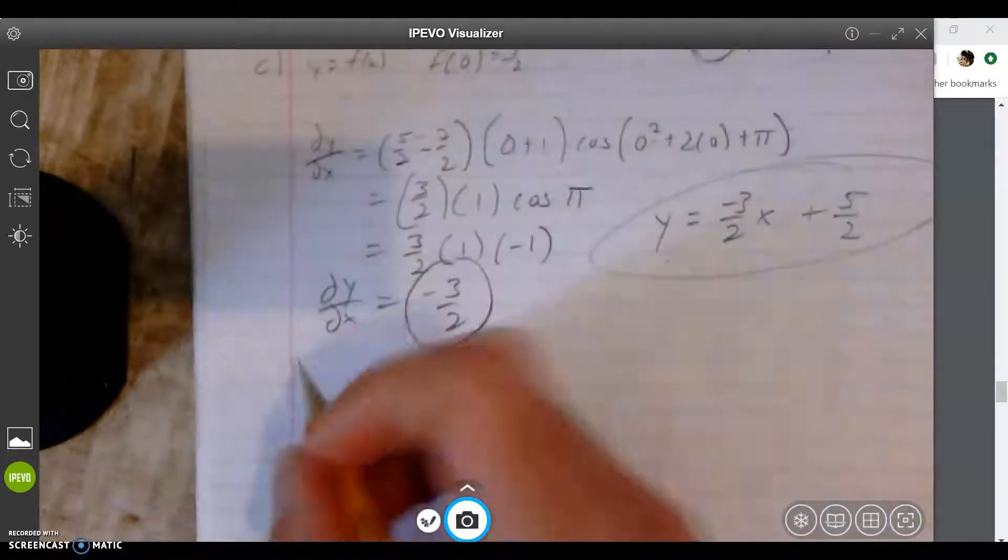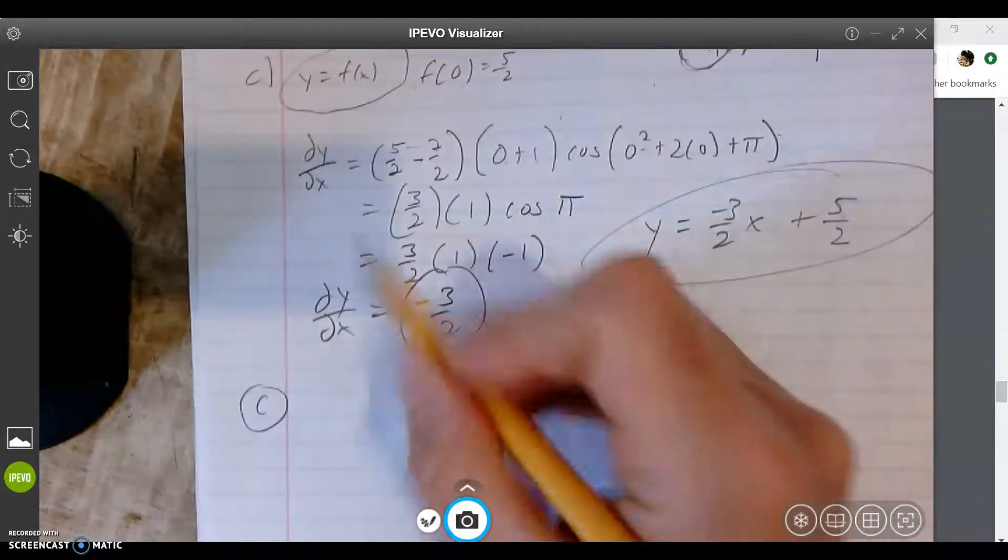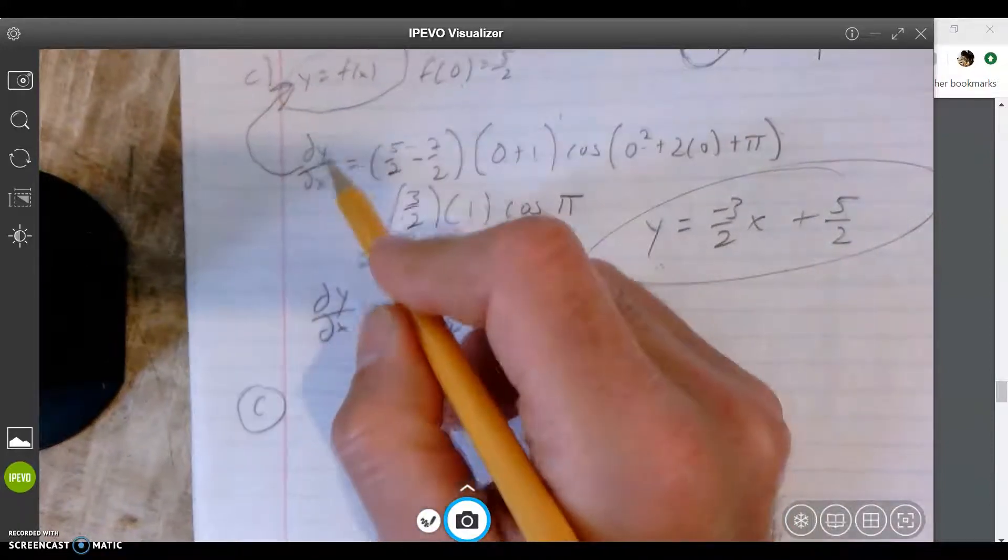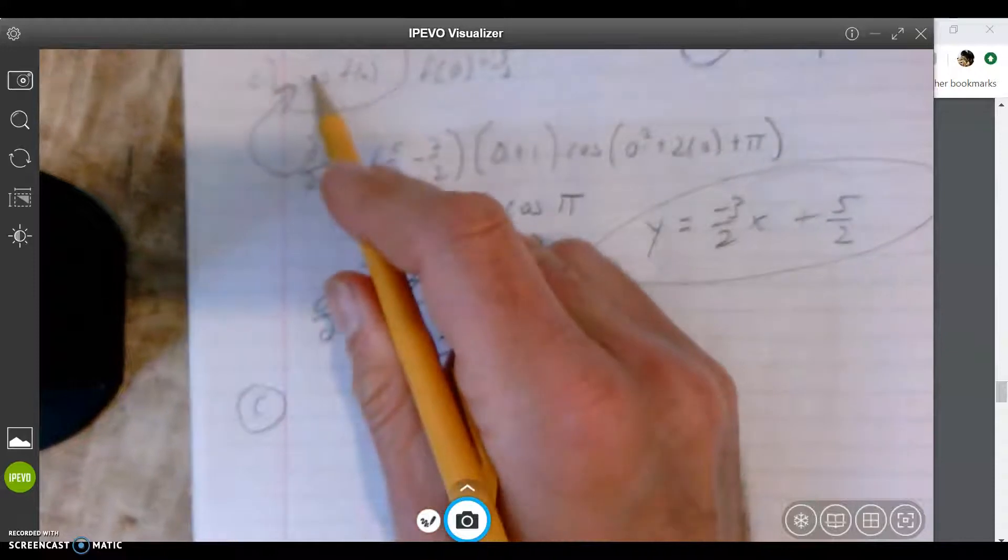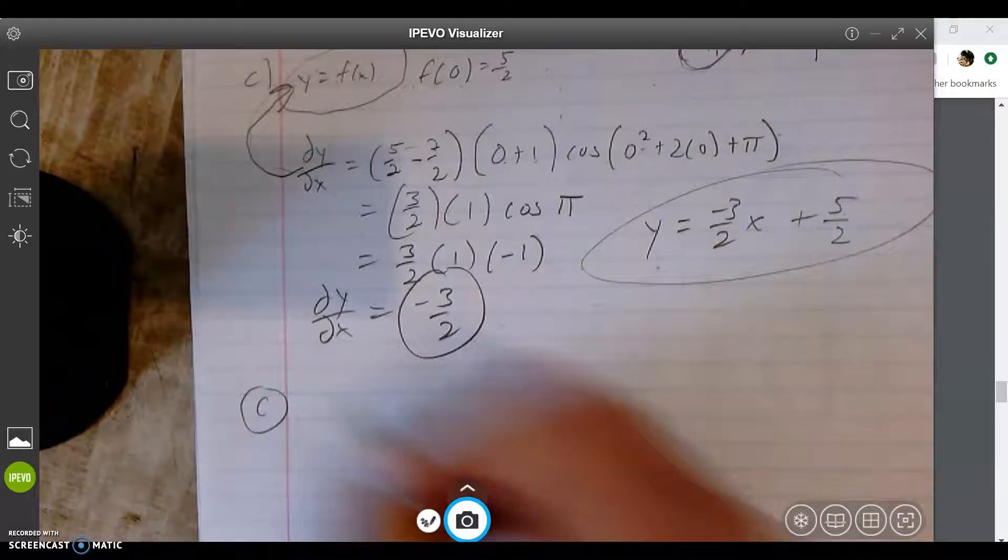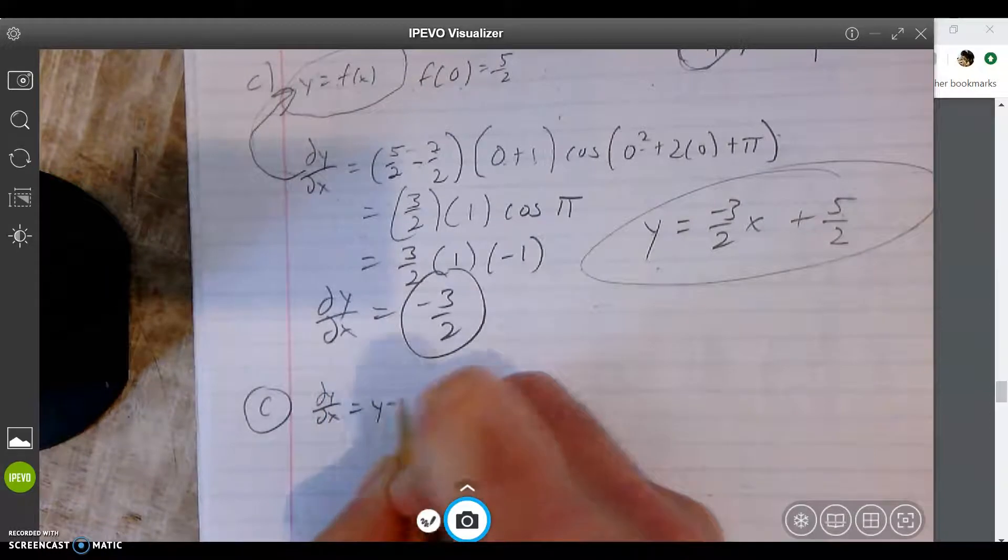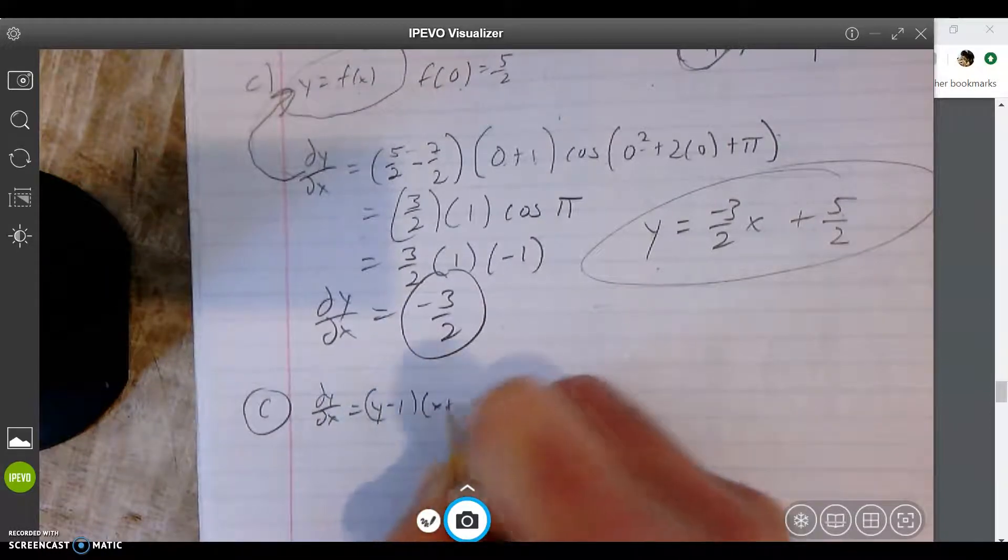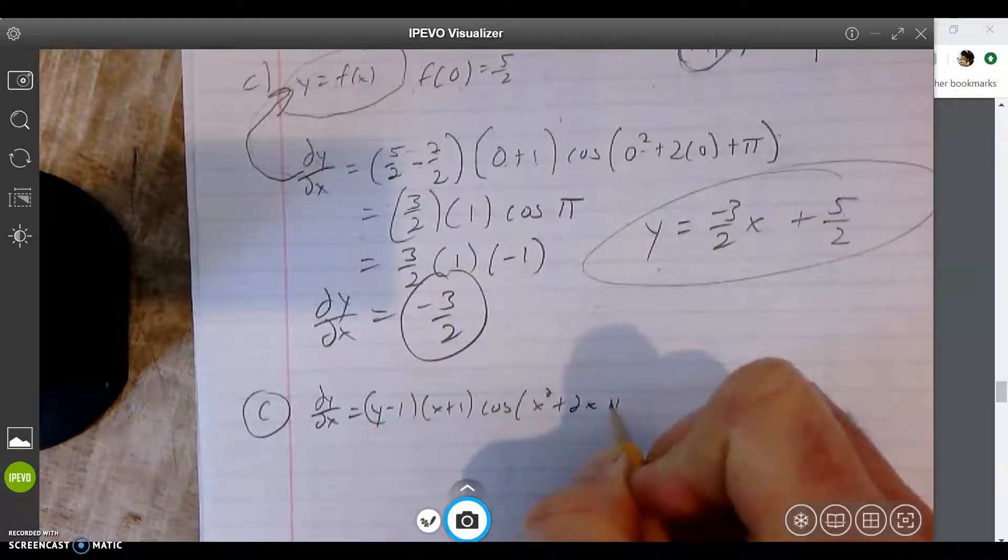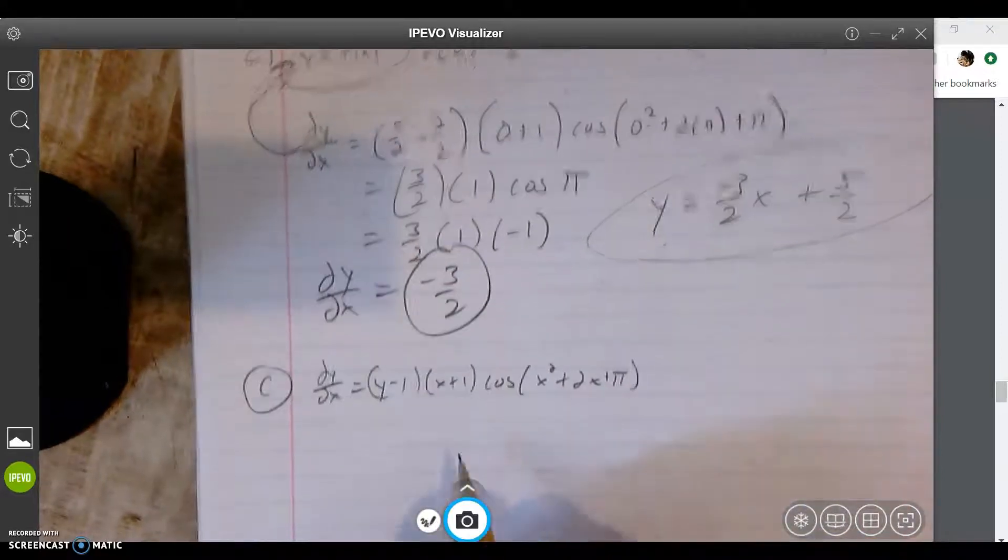Alright, let's see how we did in part C. I need to get to y = f(x). So in order to go from here to here, I need to find the derivative. In order to go from the slope to the original function, you need to get the anti-derivative. So let's copy this thing down again: dy/dx = (y-1)(x+1)cos(x²+2x+π).